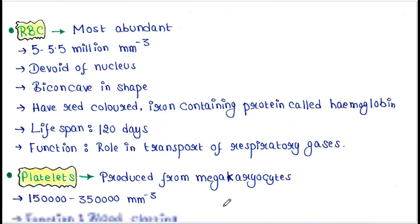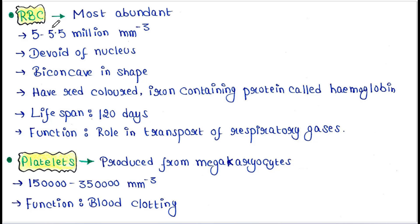Erythrocytes or red blood cells are the most abundant cells. Abundance: 5 to 5.5 million per millimeter cube. They are devoid of nucleus and are biconcave in shape. They have a red-colored iron-containing protein called hemoglobin. Lifespan: 120 days. Function: they play a role in the transport of respiratory gases.